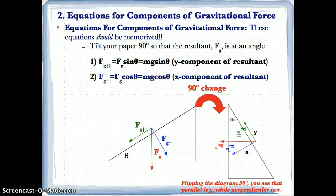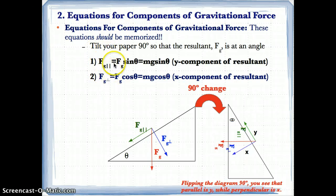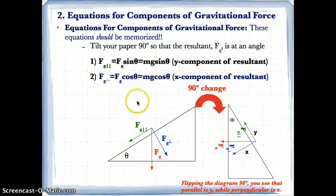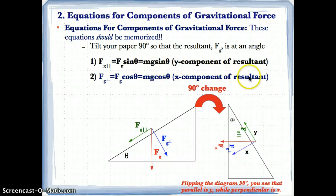Now let's talk about the equations for the components of gravitational force. These equations should be memorized because they are a little different from what you're used to seeing in your physics reference tables. For the parallel component of gravitational force, Fg parallel is equal to Fg sin theta, which is also equal to Mg sin theta, because gravitational force equals weight and weight equals mass times acceleration due to gravity. This is the y component of the resultant.